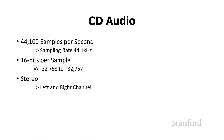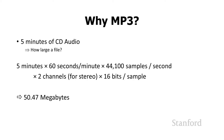The problem with CD audio is that it takes up a lot of space. Let's take a look. Suppose we have a five-minute song and we're trying to send this through the internet. Say your parents are in a band — there's this new music called punk rock — and they want to send a five-minute song to their little brother or sister. Five minutes × 60 seconds per minute × 44,100 samples per second × 2 channels × 16 bits per sample gives us about 50.5 megabytes.